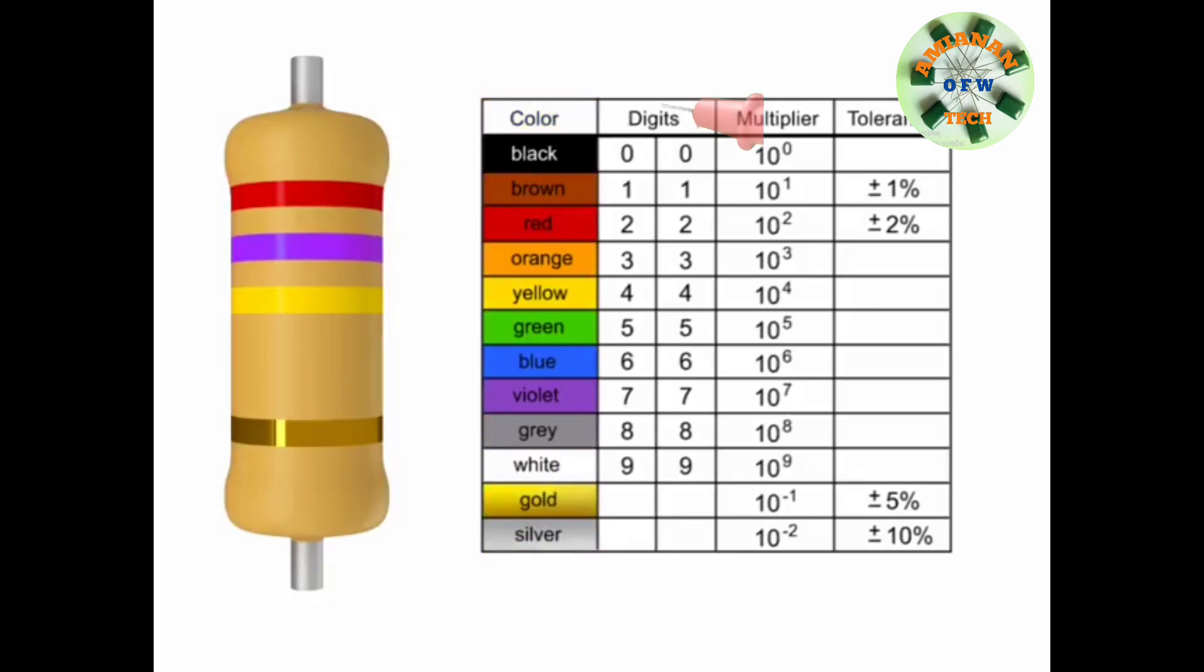In a four-band resistor, the first two bands represent the digits or significant figures. The third band indicates the multiplier, and the fourth band indicates the tolerance.